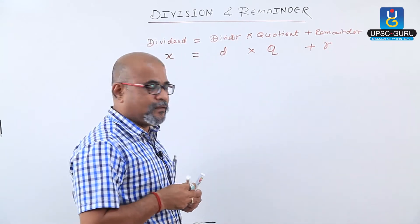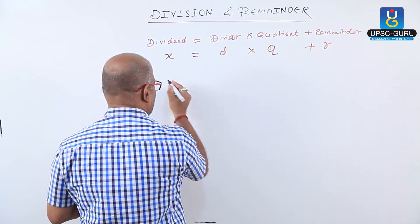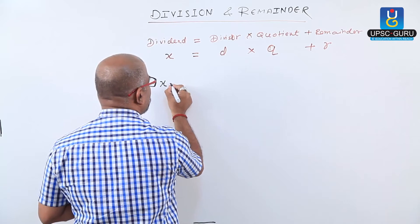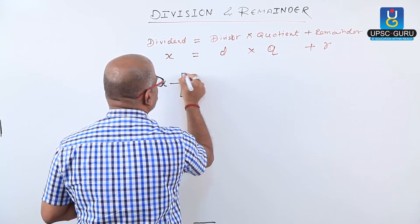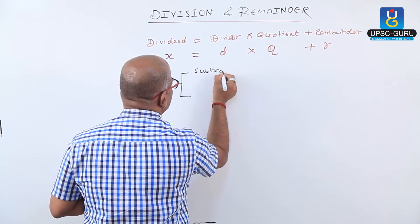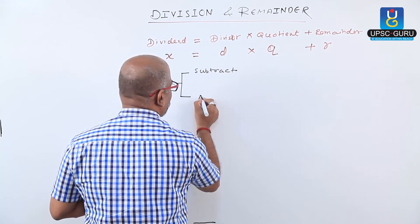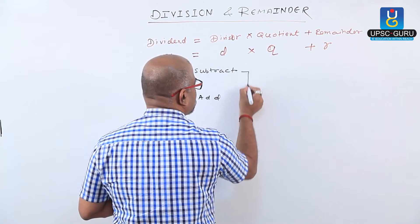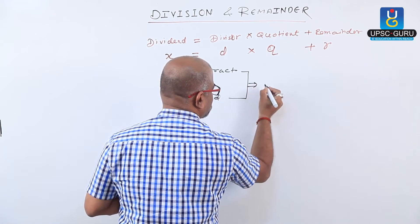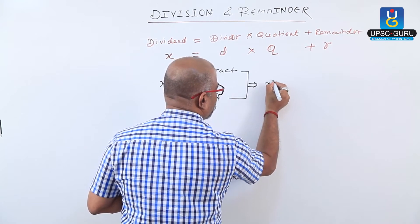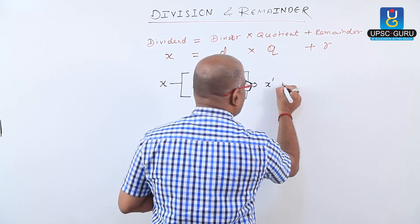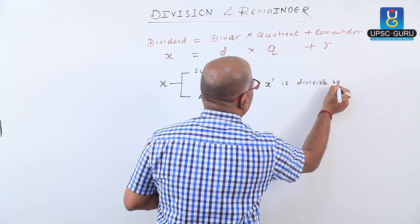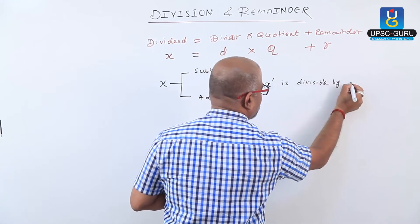The question they ask is: your given number is X, the dividend is X. Which number do we have to subtract or add to X such that the new number — which we call X dash — is divisible by the divisor D?